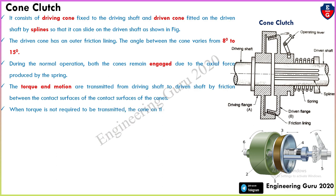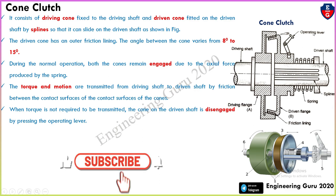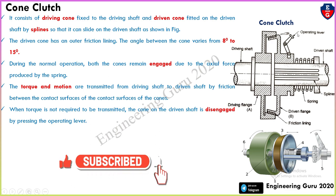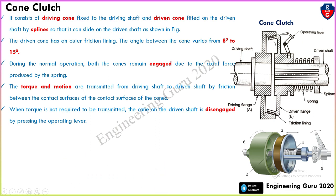When torque is not required to be transmitted, the cone on the driven shaft is disengaged by pressing the operating lever. This is the foot-operated lever. When we press this lever, the cone will be disengaged against the spring force and torque is no longer transmitted. In this image we can see the clutch in the disengaged position.